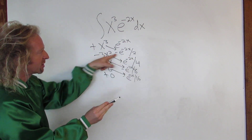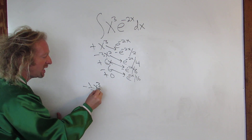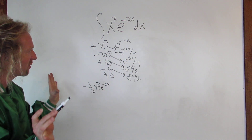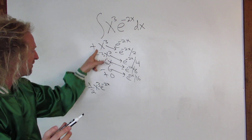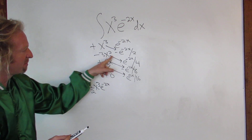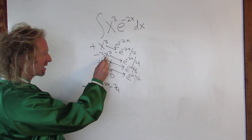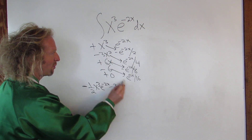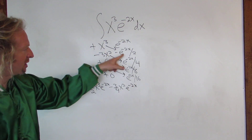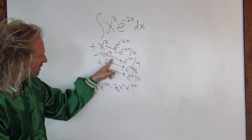Now you just follow the arrows. Following the first arrow: positive times negative gives negative, so it's negative one-half times x cubed times e to the negative 2x. Following the second arrow: it's negative again — negative 3 fourths times x squared times e to the negative 2x.